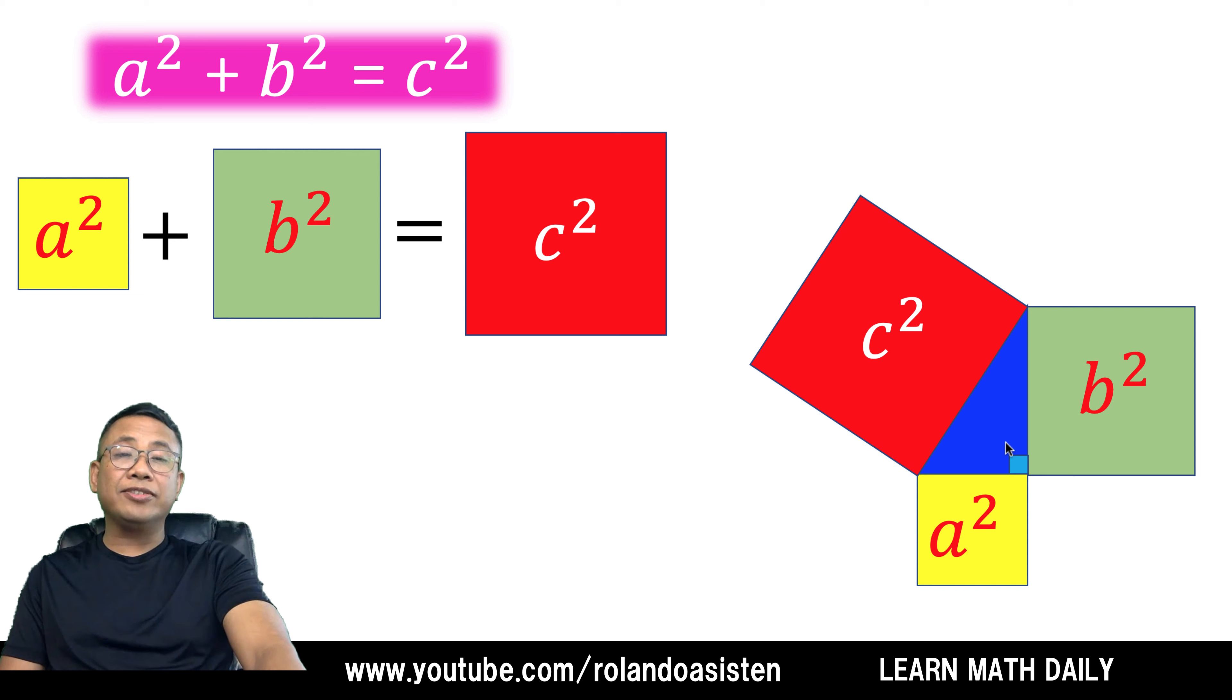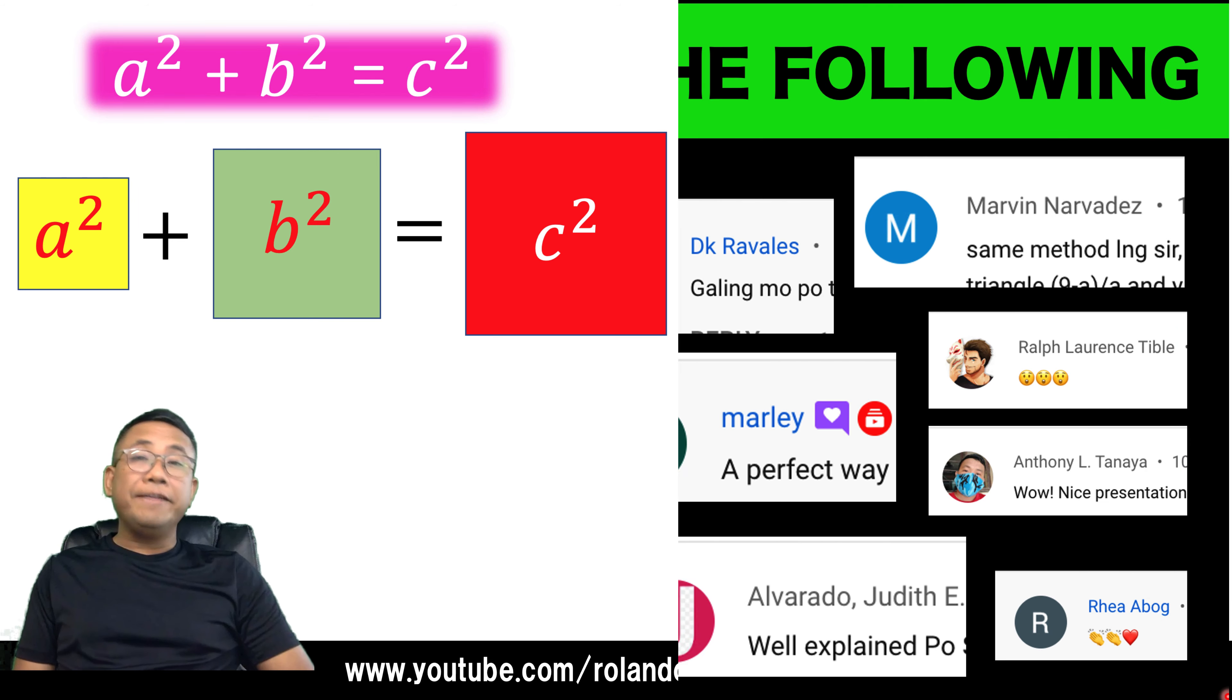So next time you have this right triangle, we know that this A squared plus this B squared is equal to C squared.